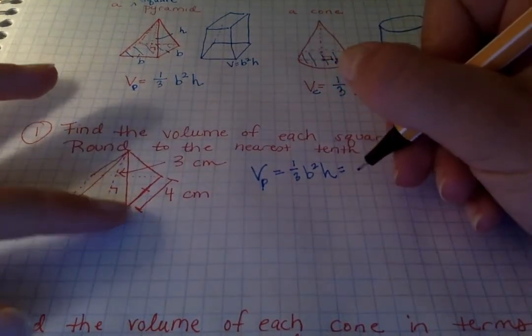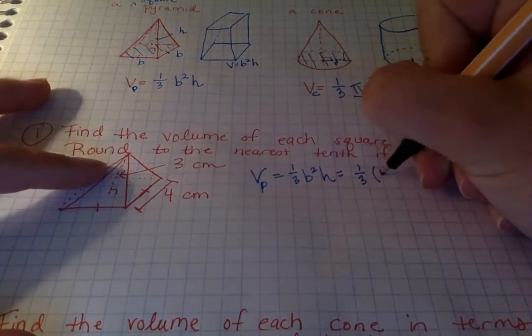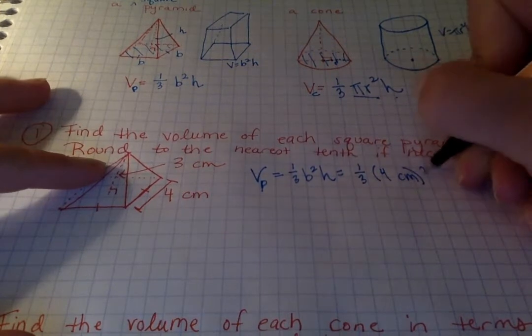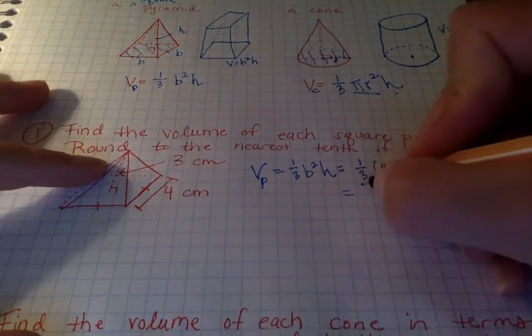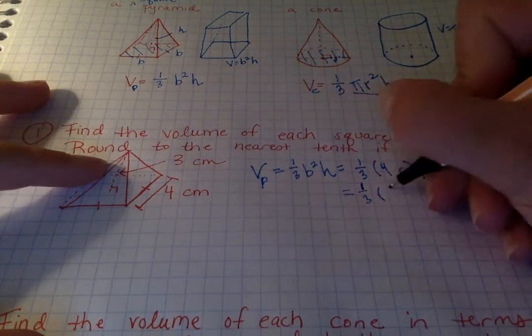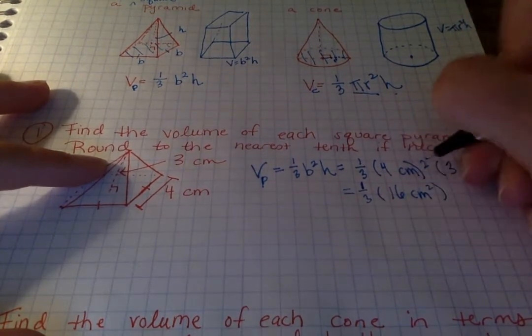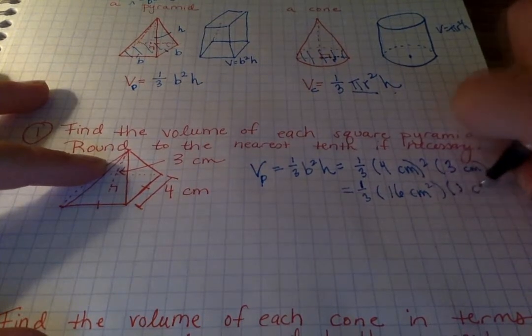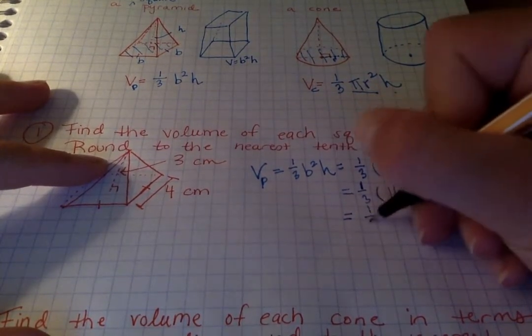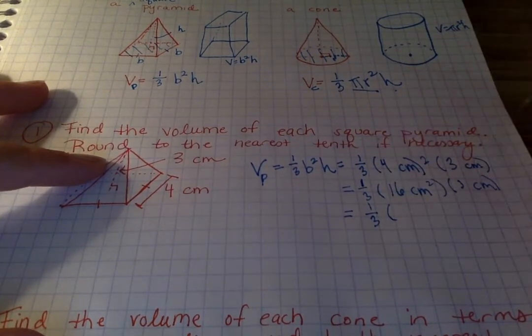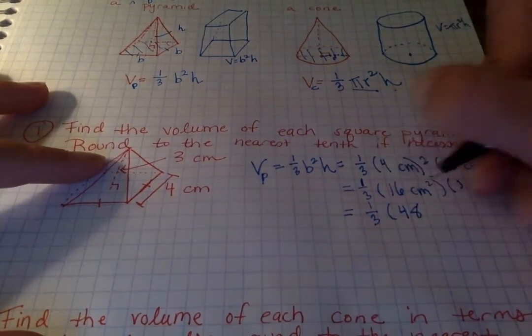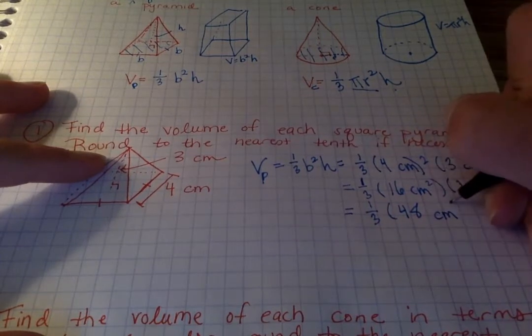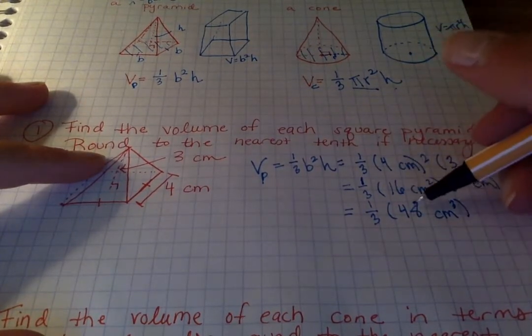Well, the base is four, and the height is three. So it's one-third. The base is four centimeters squared times the height of three centimeters. So now this is one-third times 16 centimeters squared times three centimeters. Now we have one-third times 16 times three. Well, ten times three is thirty, plus six times three, which is eighteen. So thirty plus eighteen is forty-eight. And centimeters squared times a centimeter is a centimeter cubed. So now I have one-third of forty-eight centimeters cubed.